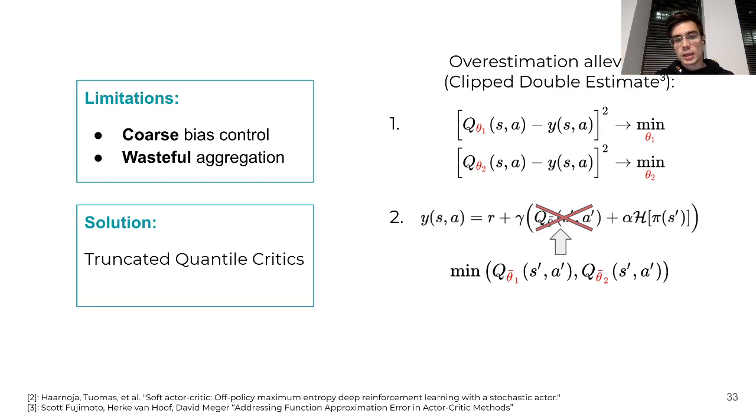This approach has several limitations. The first one is that this bias control is coarse. It means that, for example, using two Q-functions under the minimum operator could be not enough to compensate the overestimation. But using three Q-functions under the minimum could be too much already. The second problem is that, in some sense, this aggregation, this minimum operator, is wasteful because we use only one prediction and throw out the other prediction.